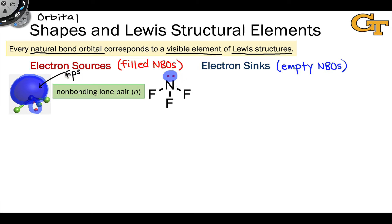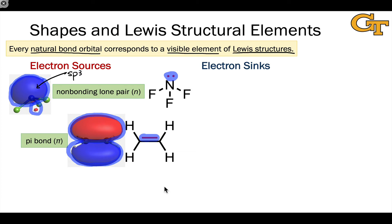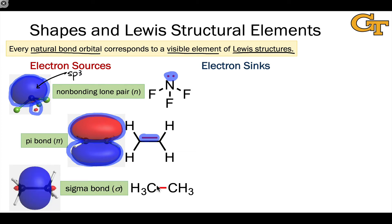Every pi bond — the second or third bond of a double or triple bond — can be associated with a pi bonding orbital. Every pi orbital has a hot dog shape, made from two p orbitals perpendicular to the molecular plane overlapping side by side. The orbital has a node in the molecular plane and opposite phase density on either side. Every single bond can be associated with a sigma bonding orbital; for example, the carbon-carbon bond in ethane can be associated with a sigma bonding orbital.